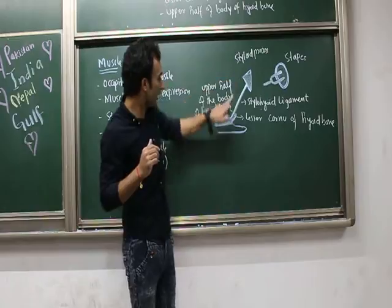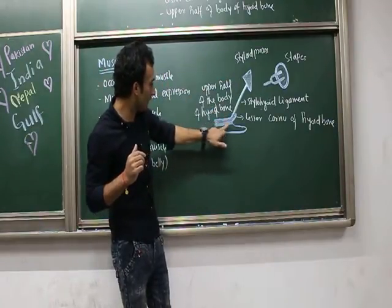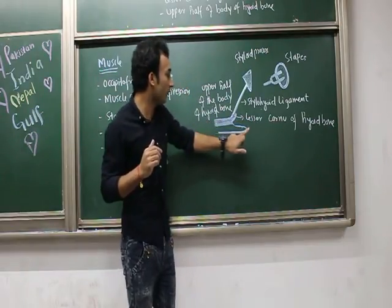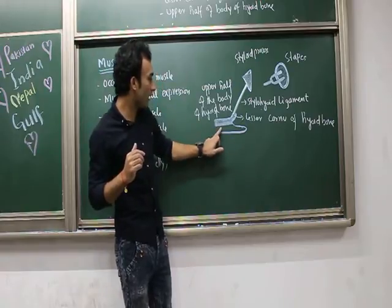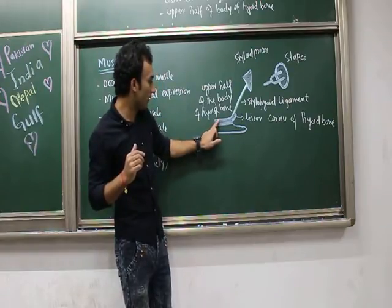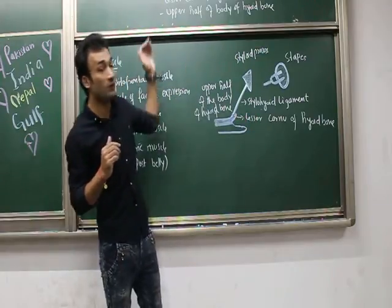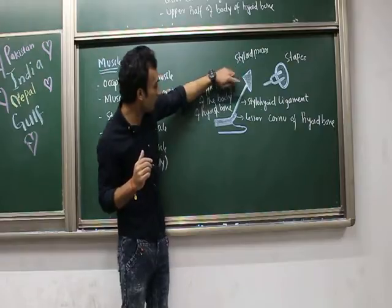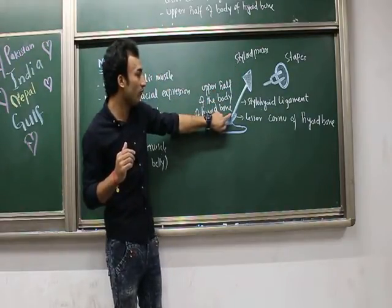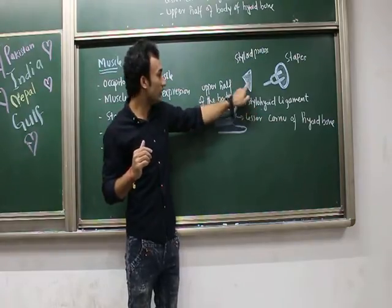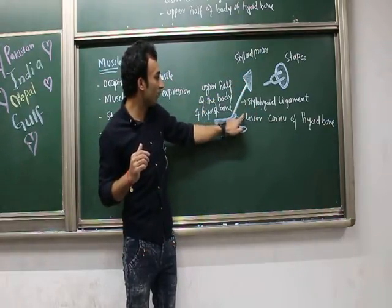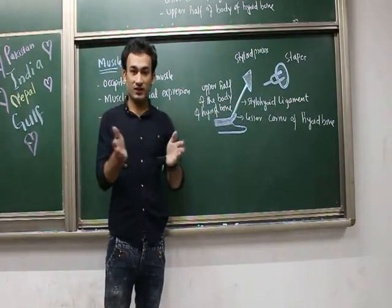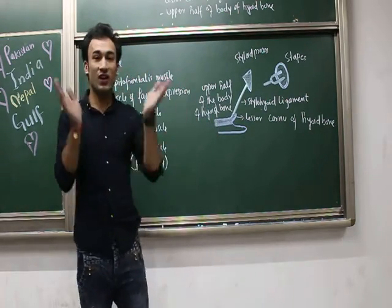In the diagram you can see the styloid process, the hyoid bone with its upper half of the body, and the lesser horn of the hyoid bone — all derived from the second pharyngeal arch. The greater horn and the lower half of the body of the hyoid bone come from the third pharyngeal arch. The ligament connecting the styloid process to the lesser horn of the hyoid bone is called the stylohyoid ligament. So remember, the second pharyngeal arch is not difficult!